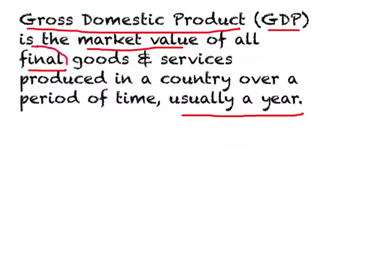When we use the term 'final,' what we have in mind is goods and services that are produced and sold to consumers and not to producers. We distinguish between a final good and an intermediate good. An intermediate good is one which is used as an input to produce something else.